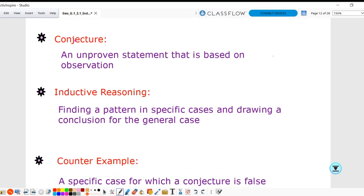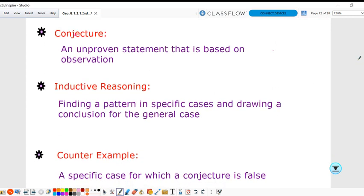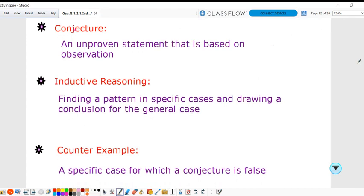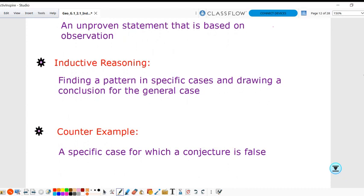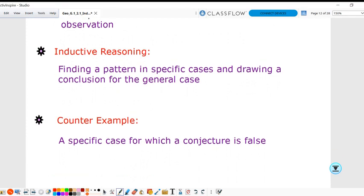To review vocabulary: a conjecture is an unproven statement based on an observation. Inductive reasoning is when you find a pattern in a specific case and draw a conclusion. When using inductive reasoning, think about a counterexample. A counterexample is a specific case for which your conjecture is false. Those are the important vocabulary key terms for our first unit on logic.